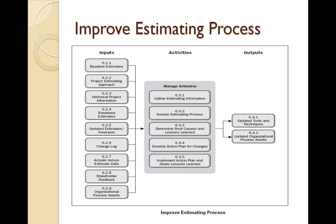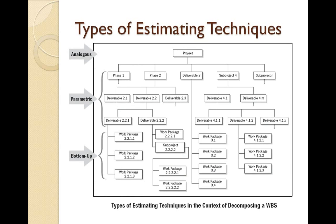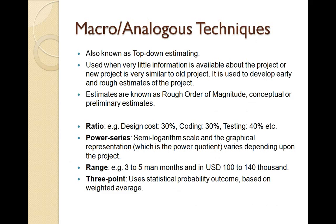Let's look at the categories of estimation techniques — not specific techniques, but their categories. The top-level technique is analogous estimation, a high-level or top-down technique. We also use parametric techniques, which use parametric models, mathematical queries, and calculations. And we use bottom-up estimations, where we detail down to the work package level using a work breakdown structure — covering all project phases, deliverables, individual work packages, and tasks — then roll up the estimates to the top.